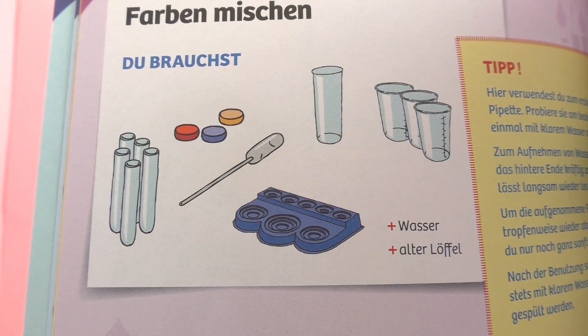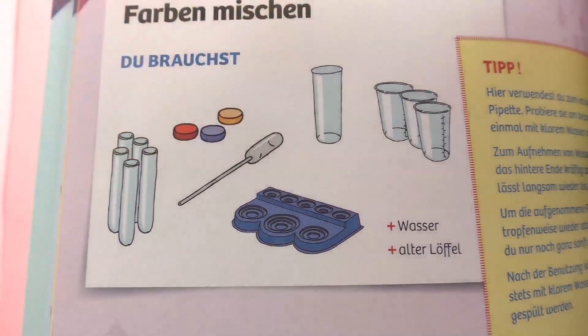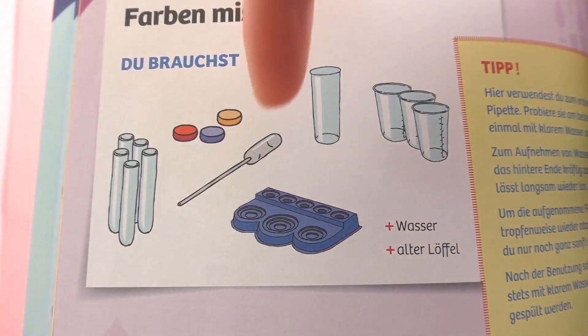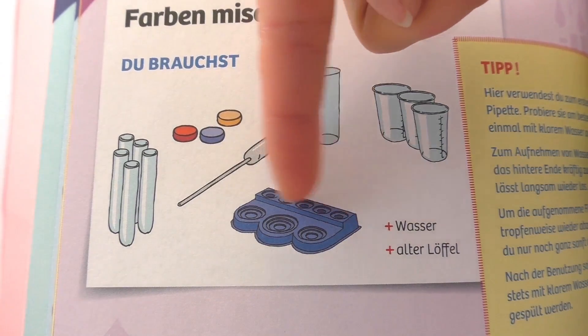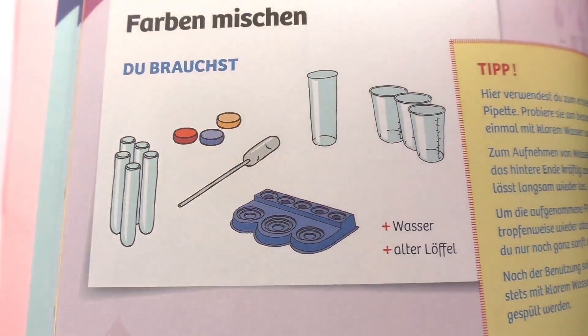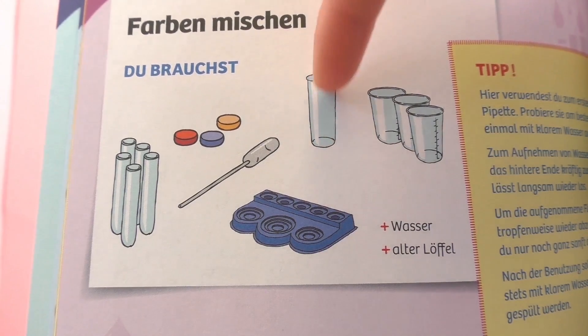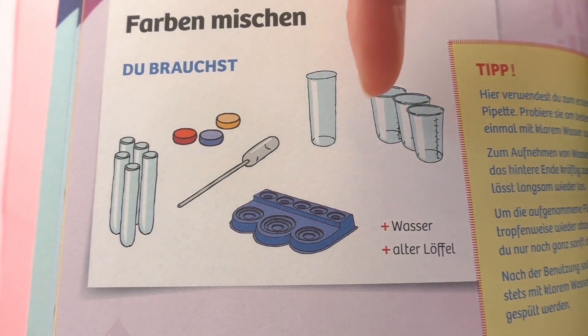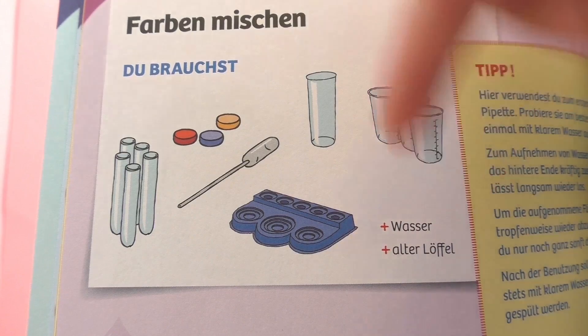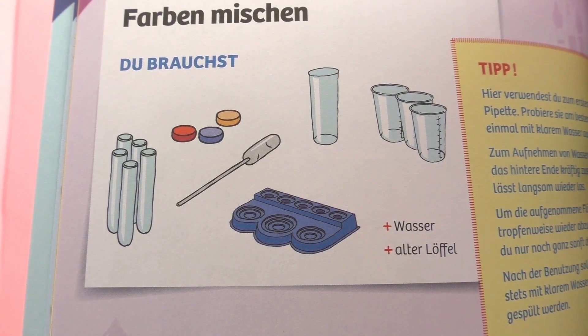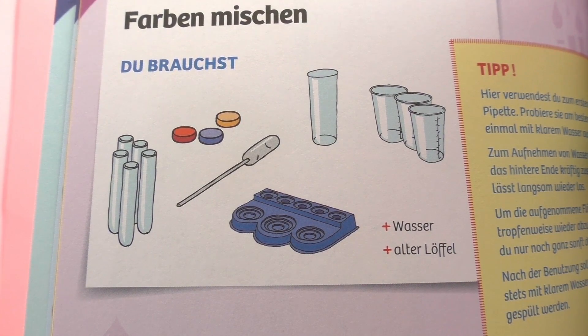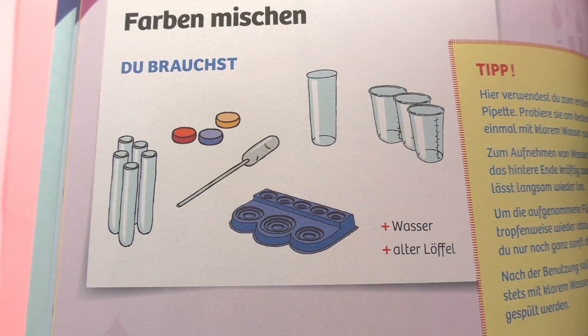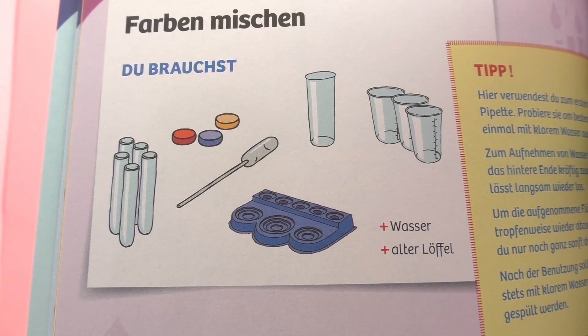So let's see what else we need. I'm going to be using five test tubes, but you can also substitute this for little cups, three color pellets, an eyedropper, a stand, a bigger cup, and three more cups. We're also going to need an old spoon and some water to do the mixing. You can substitute all this at home on your own if you don't have this kit.